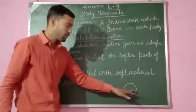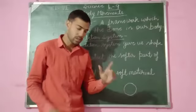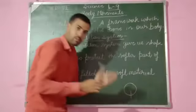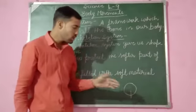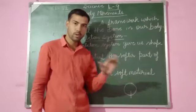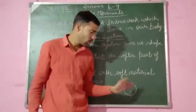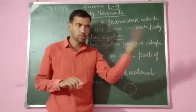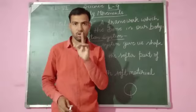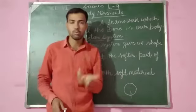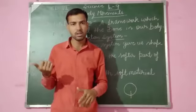For example, a plant cannot move from place to place, but it can move on its axis. Plants can move from their axis but they do not change their place. In locomotion, the whole body or organism moves from one place to another, changing their place. The best example of movement is plants, and the best example of locomotion is animals and humans.